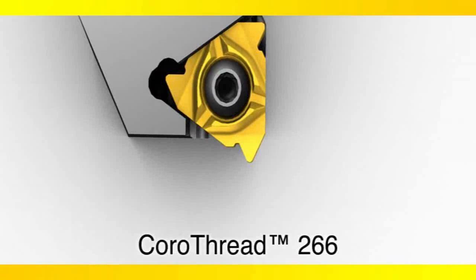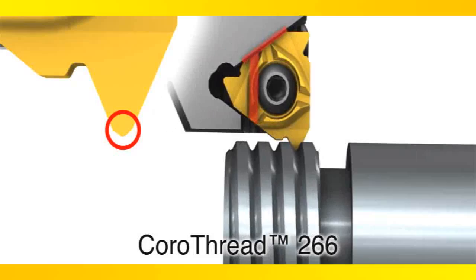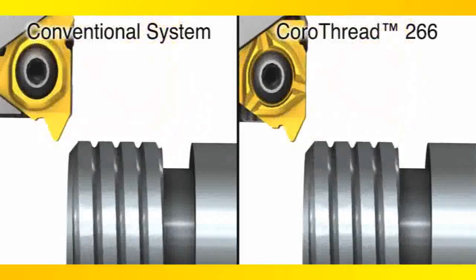CoroThread 266 allows very accurate insert edge positioning in the axial and radial directions. With the CoroThread 266 system, the insert still experiences these forces as it enters and exits the thread, but the insert tip is no longer moving. The CoroThread system is designed to disperse the cutting forces along the convex rail and the back wall of tool holder pocket, as indicated by the red lines.